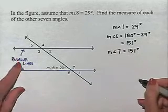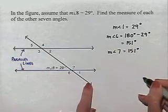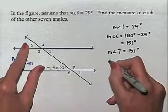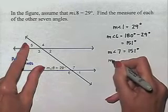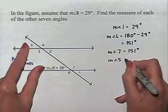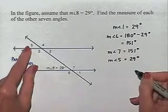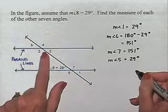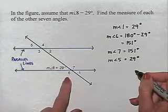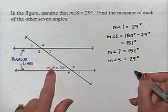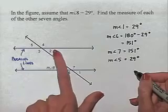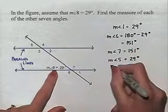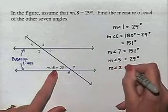Now noting that we have parallel lines with a transversal drawn between them, we can go to angle 5 and notice that it corresponds to angle 8. The measure of corresponding angles when we have a transversal between parallel lines is the same, so the measure of angle 5 is also 29 degrees. Additionally, angle 2 is called an alternate interior angle with angle 8, so it is congruent to the measure of angle 8, and therefore the measure of angle 2 equals 29 degrees.